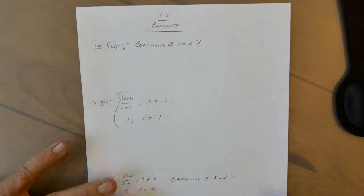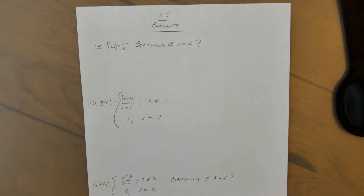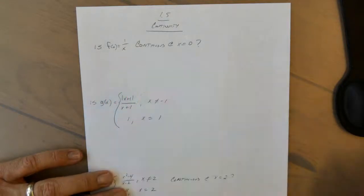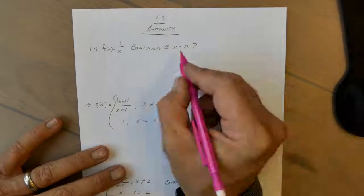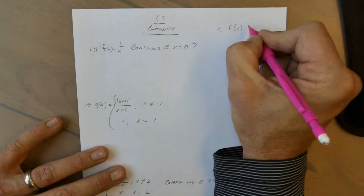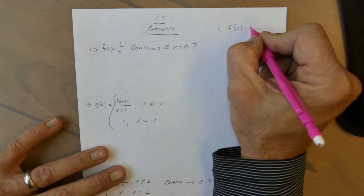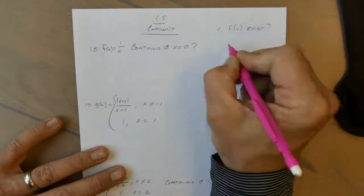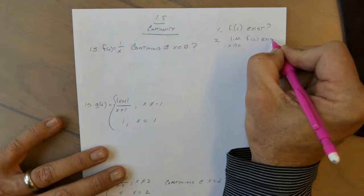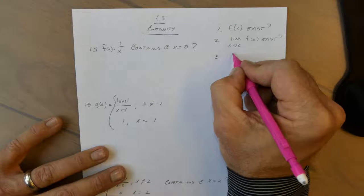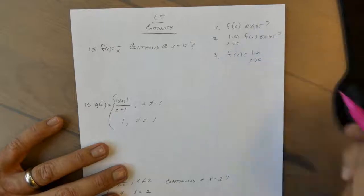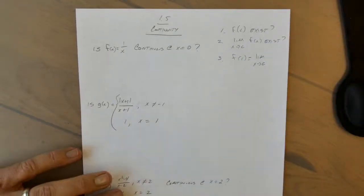Today we're going to look at some problems involving continuity. For our first problem: is f(x) = 1/x continuous at x = 0? Remember, for continuity at a point we have three conditions: one, f(c) exists; two, the limit as x approaches c exists; and three, f(c) must equal the limit as x approaches c. If those three conditions are met, then the function is continuous at a point.